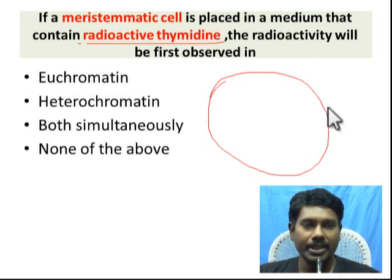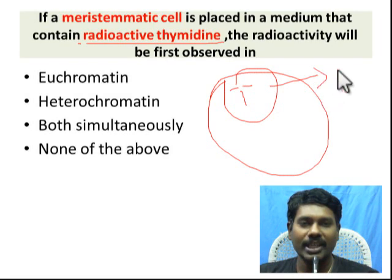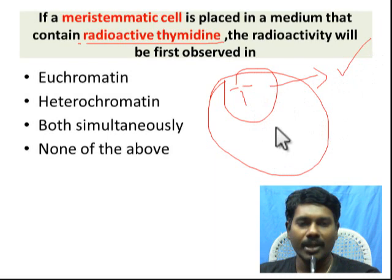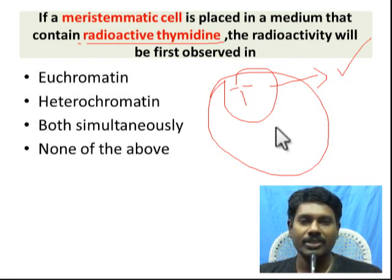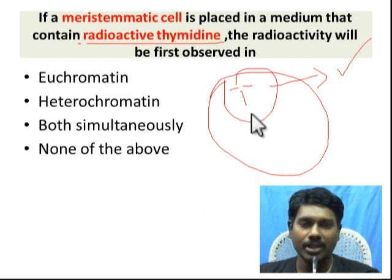In meristematic cells, the medium contains radioactive thymine. As you know, the nucleotide bases are adenine, guanine, cytosine, and thymine — and here thymine is made radioactive. So in this medium, the mother cell (meristematic cell) undergoes mitotic division and produces daughter cells. The daughter cells therefore incorporate radioactive thymine.